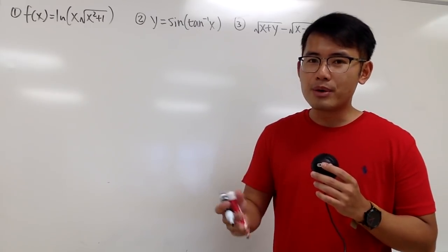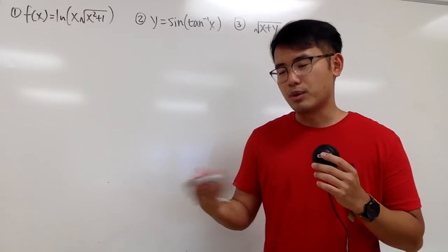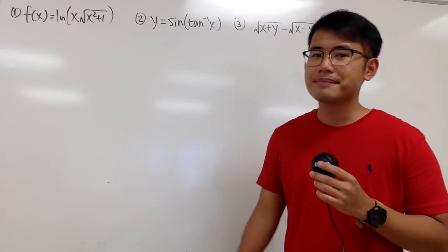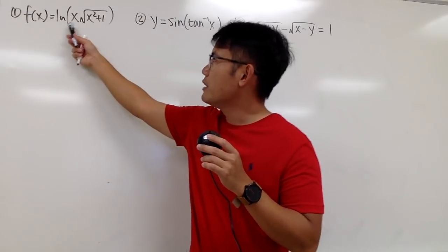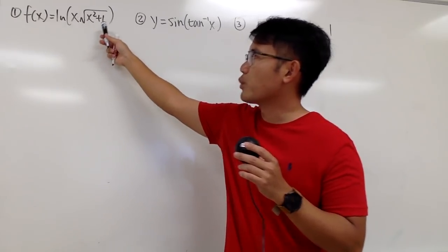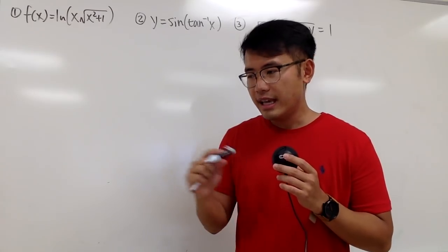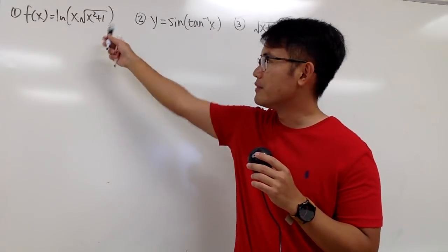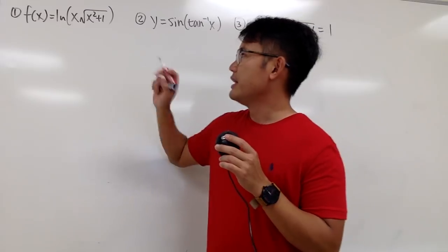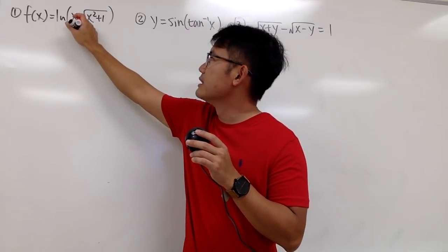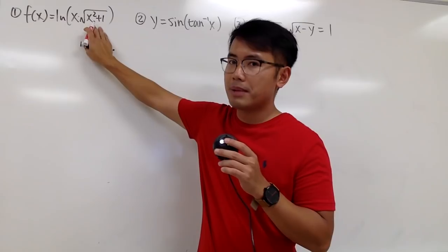And you have to remember all of the quotient rule, chain rule, product rule, power rule, and things like that. Take a look at the first one. Our function is ln of x times square root of x squared plus 1. And you should ask yourself, is there any algebra that we can do to simplify the expressions first? In this case, yes, because here we have x times square root of x squared plus 1.